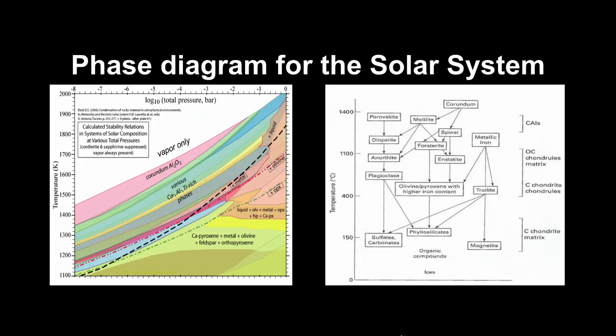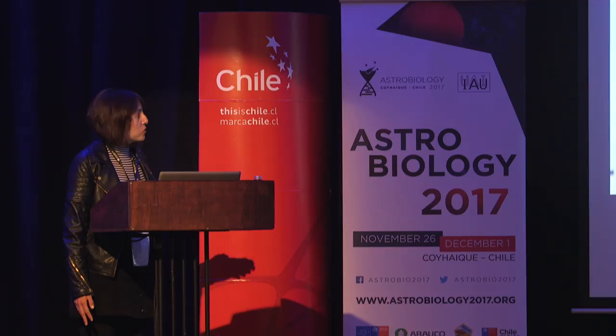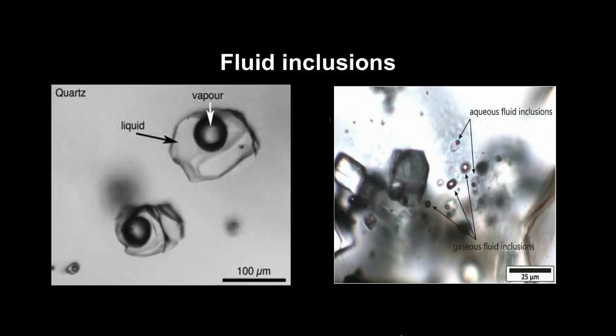This is a fluid inclusion. It's a sealed cavity with fluids and water, and you can find something like a family of inclusions in minerals. Fluid inclusions are created from imperfections in crystals, and these imperfections allow volatiles to be kept in these zones.